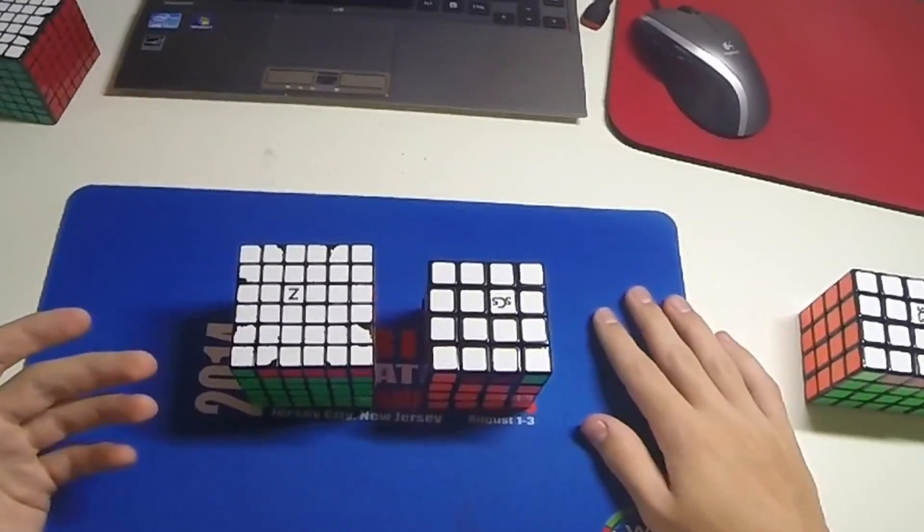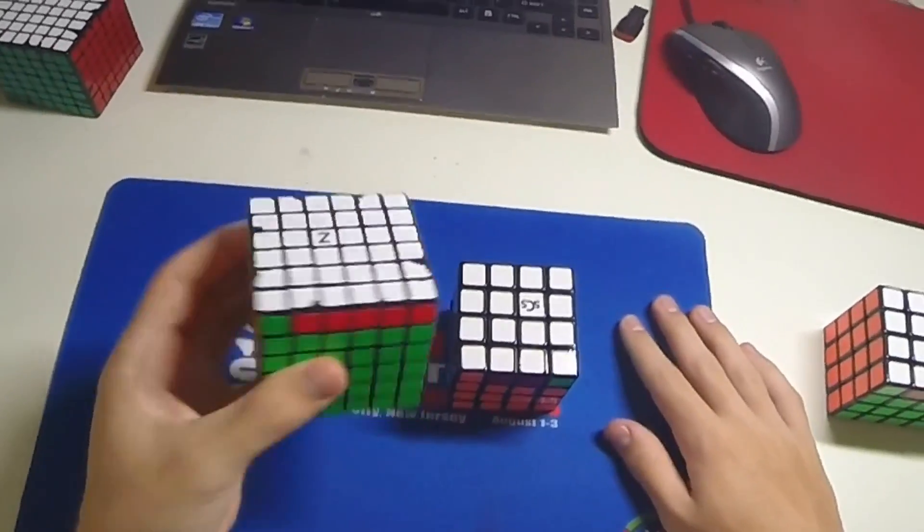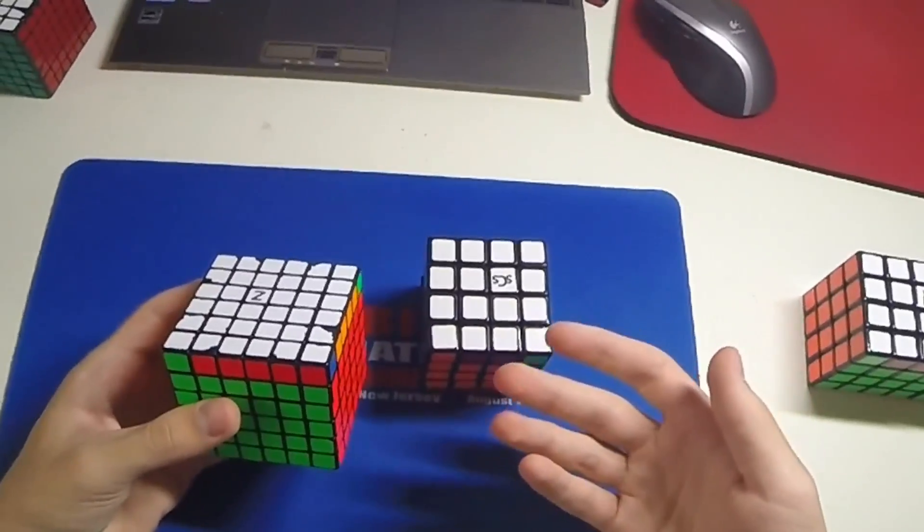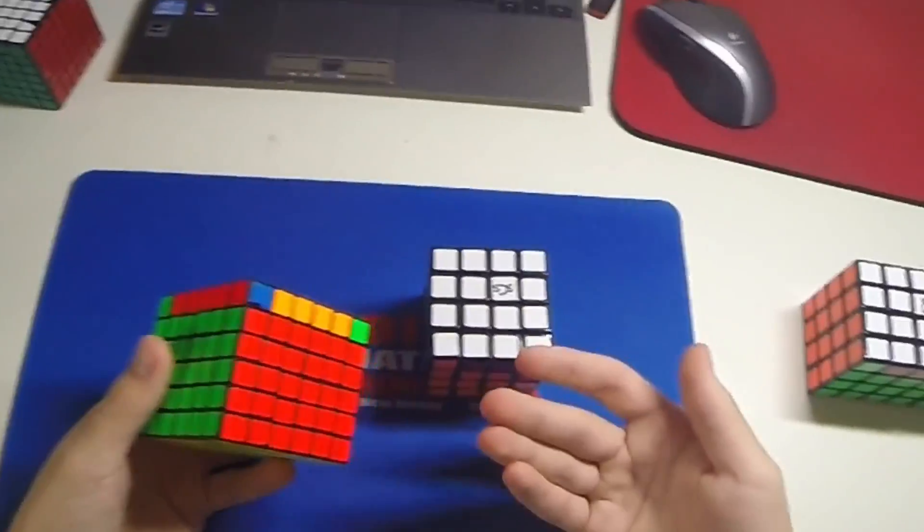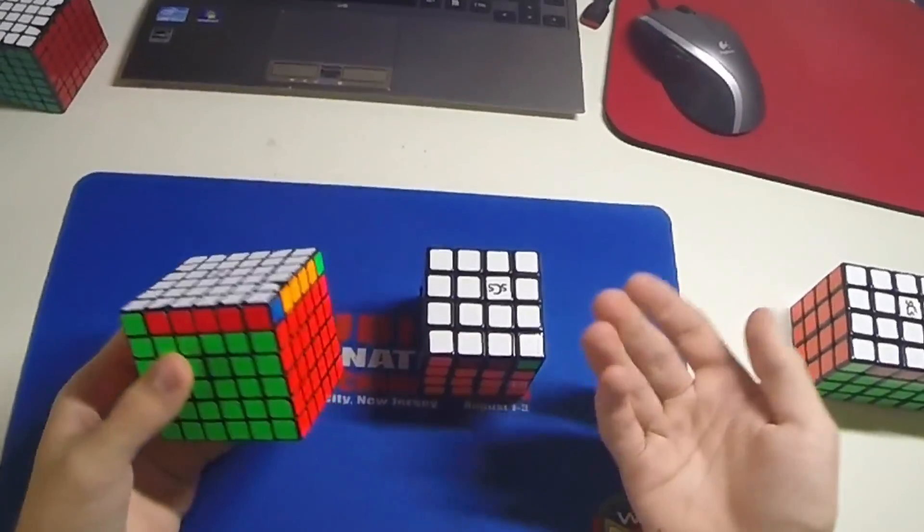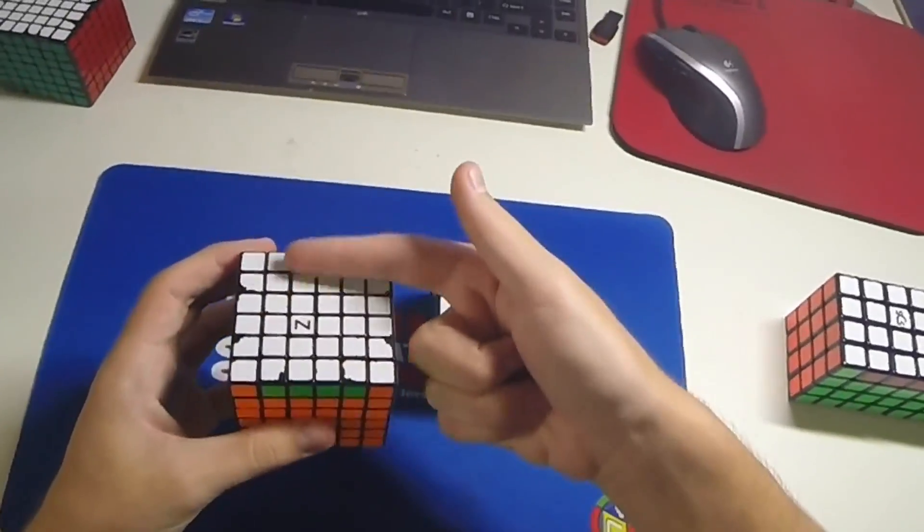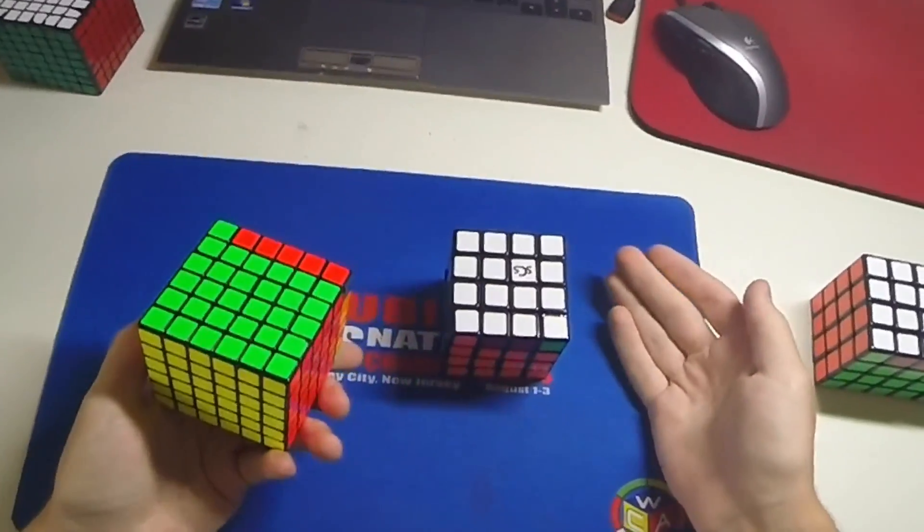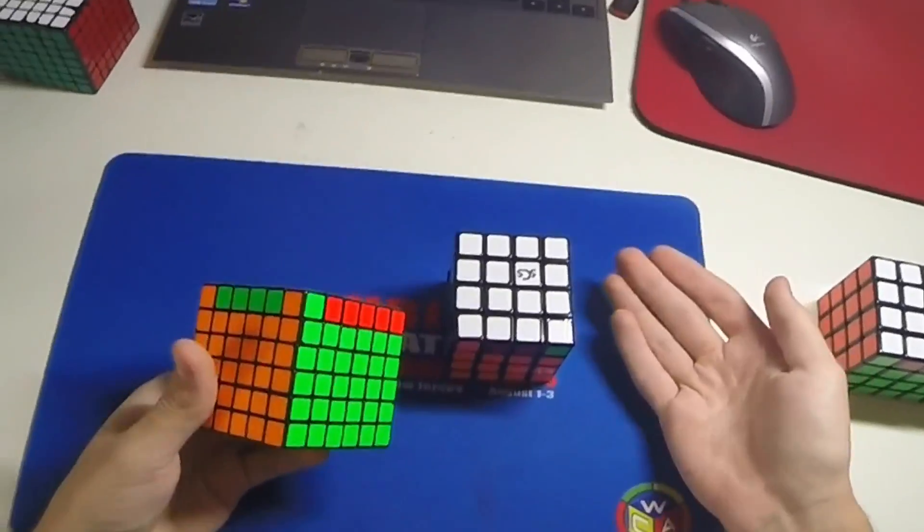Now for most beginners, when they see that they have parity, they'll just go ahead and execute a PLL parity algorithm and then do the PLL, whatever one comes up. But obviously we all know that the PLL parity algorithm swaps two opposite edges, so you can use that to your advantage to force a better PLL.